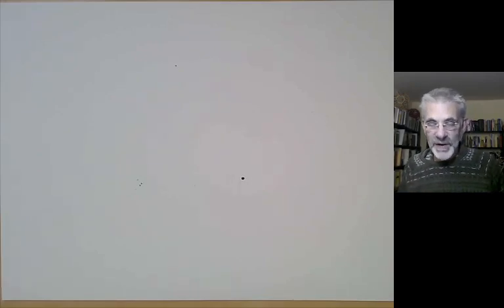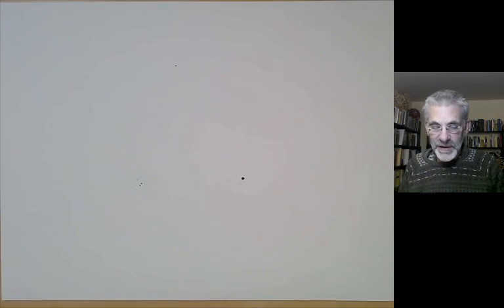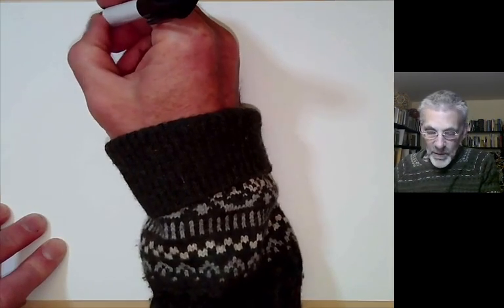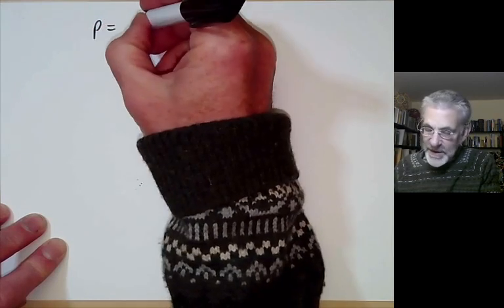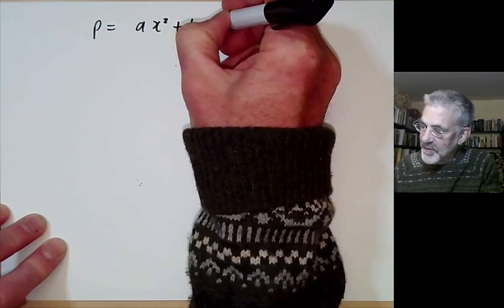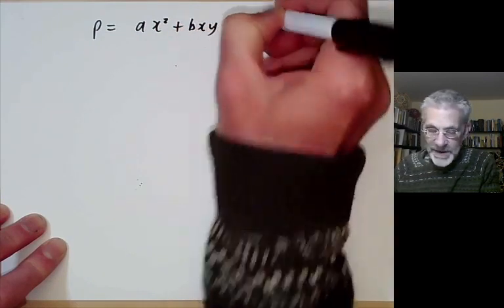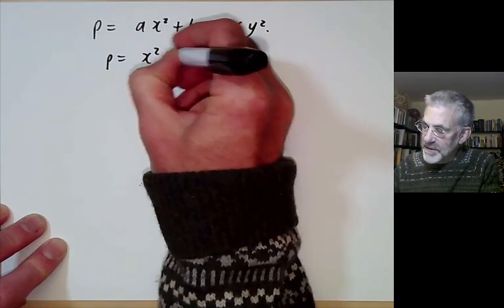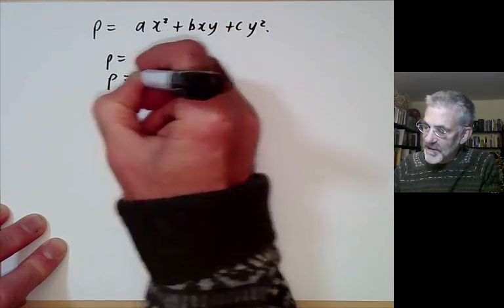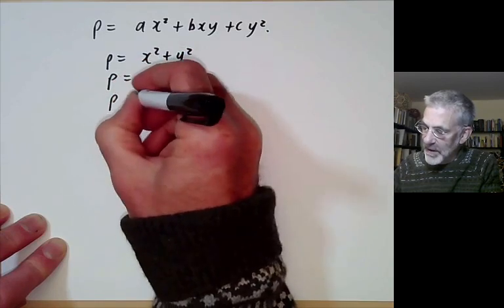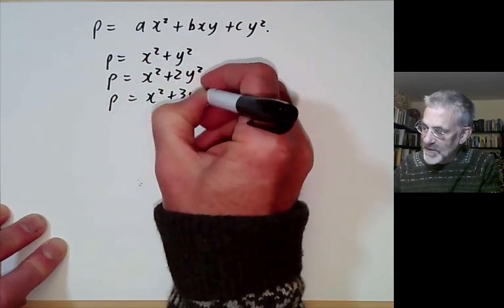This lecture is part of Berkeley Math 115, an introductory undergraduate course on number theory, and will be about the question of which primes can be represented by various quadratic forms of the form ax² + bxy + cy². For example, we might ask which primes are sums of two squares, or which can be written as a square plus two times another square, or a square plus three times another square.